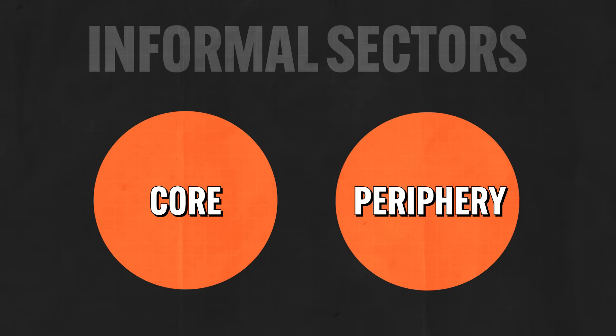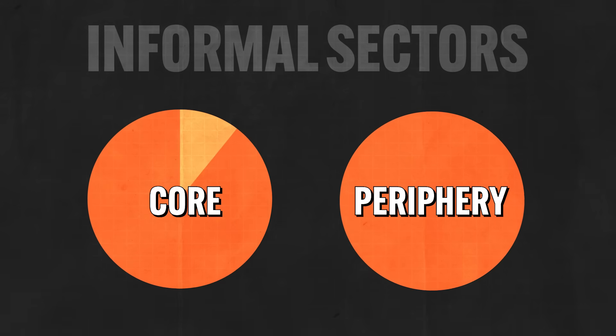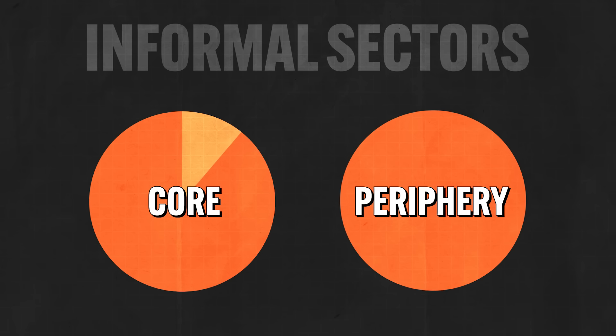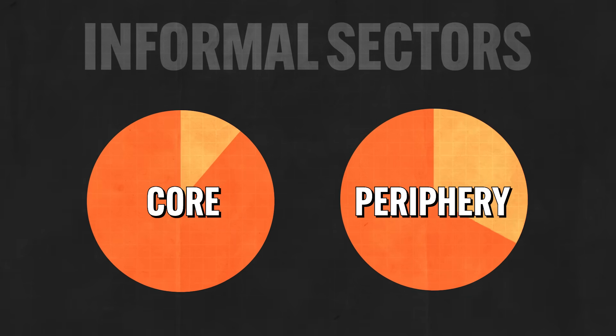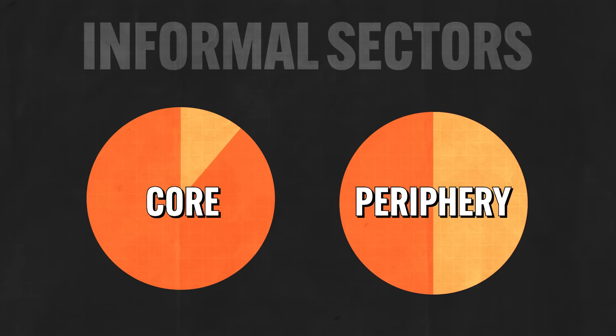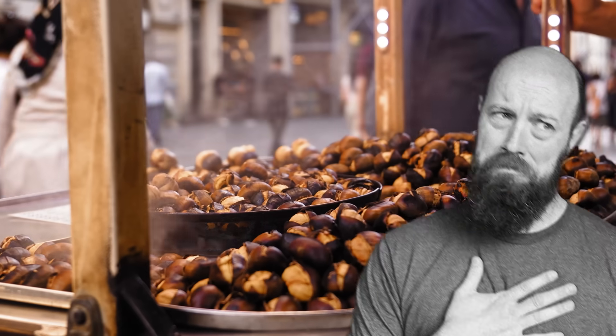In many core countries, the informal sector represents an additional 10–20% in value above the gross measures. However, informal sectors are far more prevalent in peripheral countries and in some cases can constitute almost half the nation's economic value. For example, buying art or trinkets from a person with a kiosk on a street corner in a peripheral country is part of the informal economy. The larger a country's informal sector, the less developed they tend to be, and the smaller the informal sector, the more developed they are.